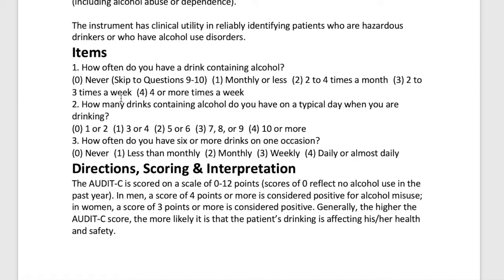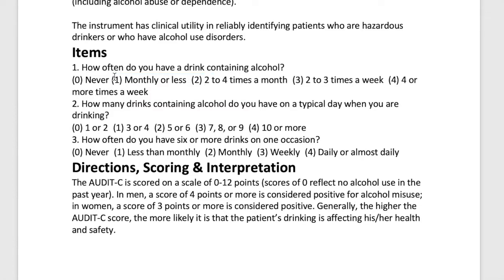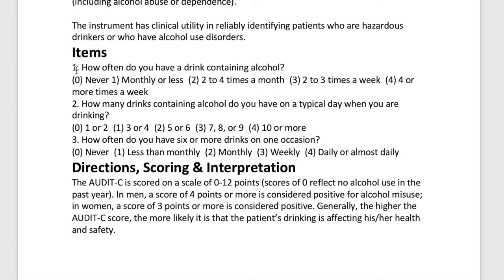Question one: How often do you have a drink containing alcohol? There are several options to select from. Note: there is a longer AUDIT questionnaire with more than three questions, but the AUDIT-C is the shorter, more brief version. Question two: How many drinks containing alcohol do you have on a typical day when you are drinking? Options include: one to two, three to four, five to six, seven to nine, or ten or more.